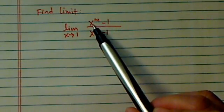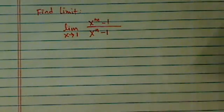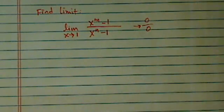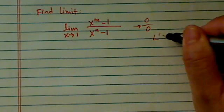1 to the m, which is 1, 1 minus 1, 1 minus 1, we have a situation of 0 over 0. Of course, we're going to be using L'Hospital's rule.